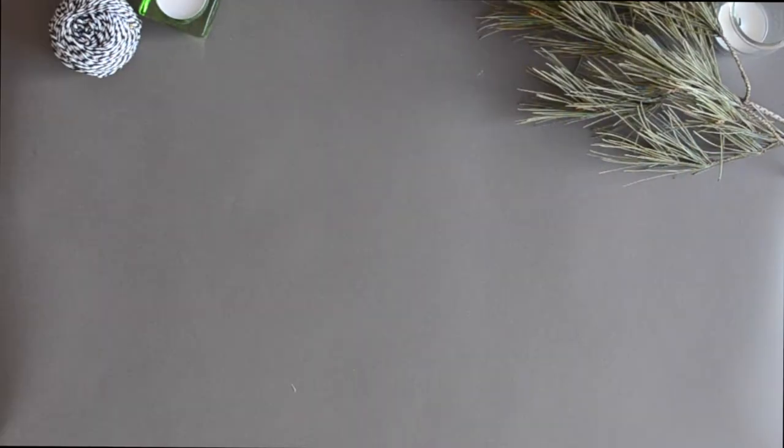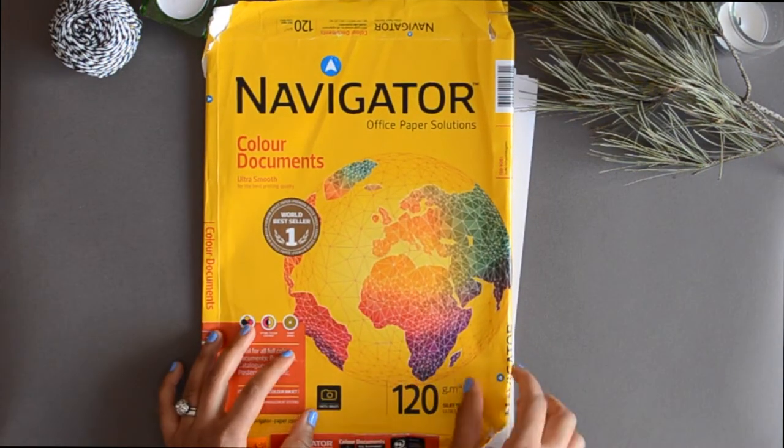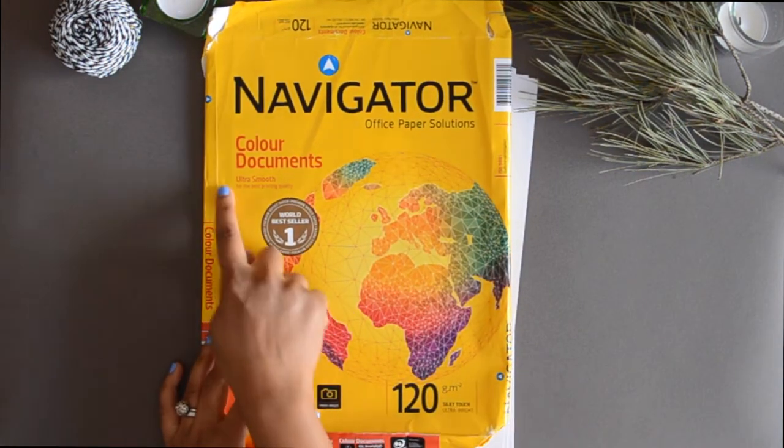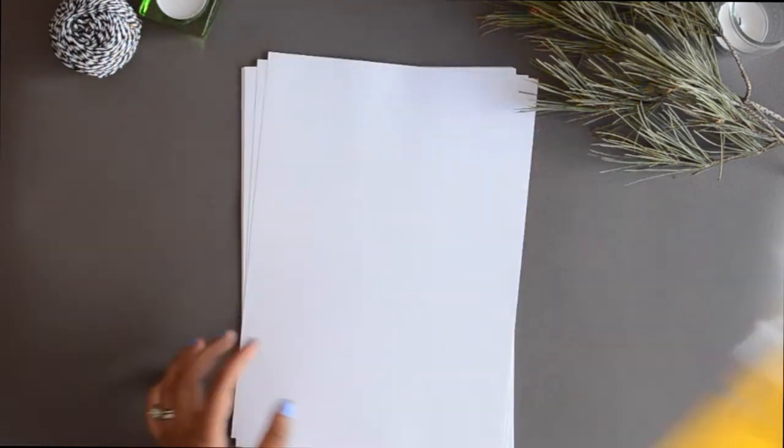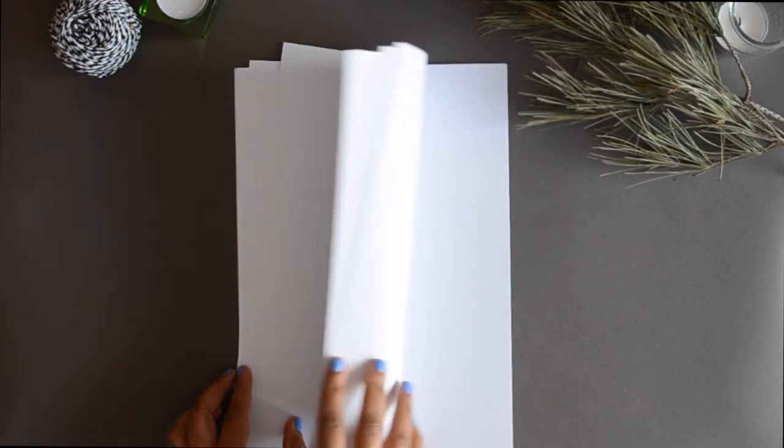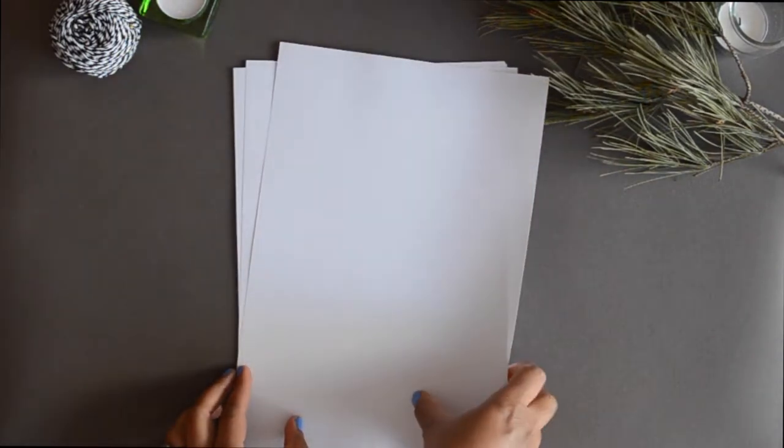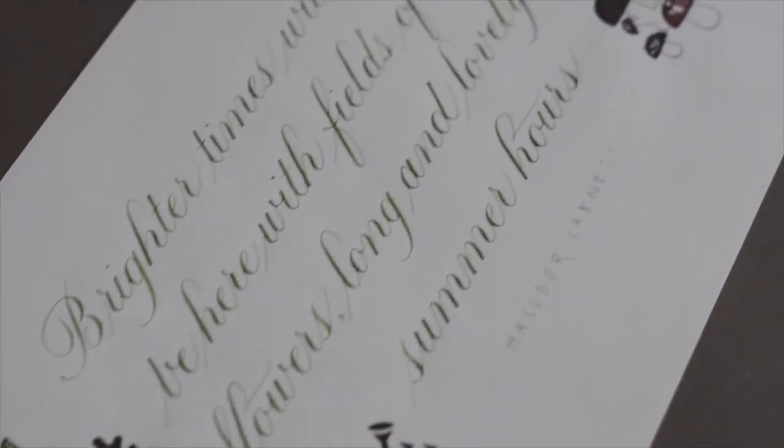The fourth thing you might be able to do is just find some printer paper that works really well. So I found this one. It's labeled ultra smooth. It's 120 GSM and I find it works really well. It doesn't bleed or feather and it's by far the cheapest option out of everything that I've mentioned since it comes in a huge pack. So if you can find printer paper that works for you, that is awesome.